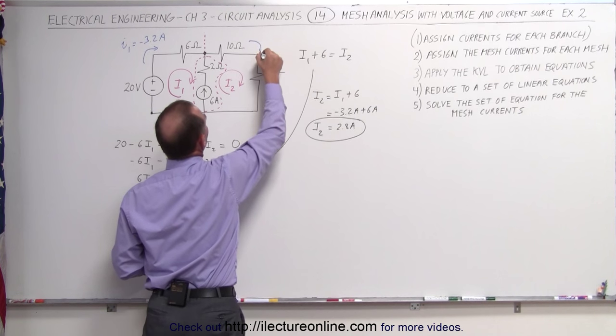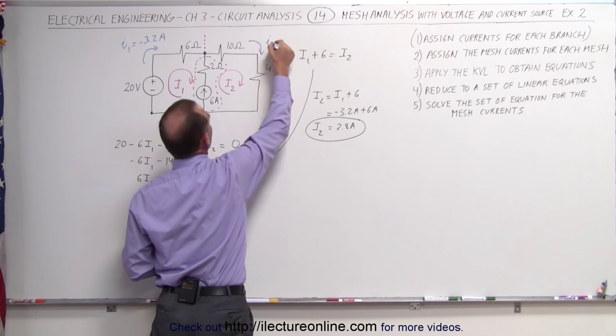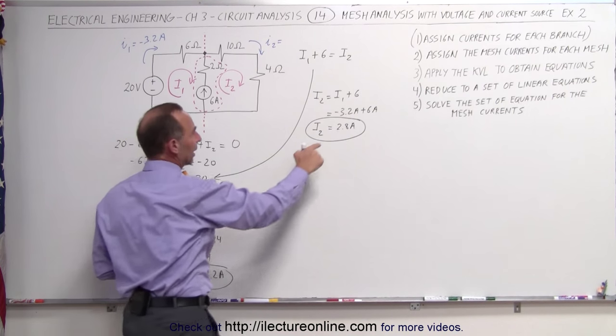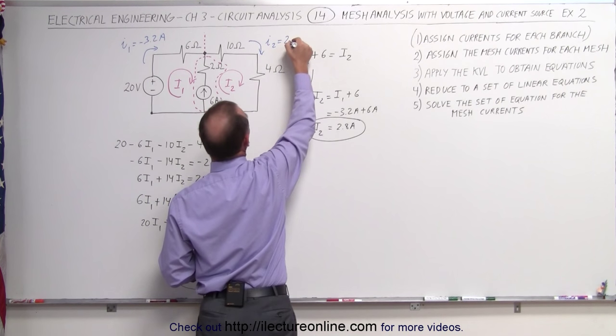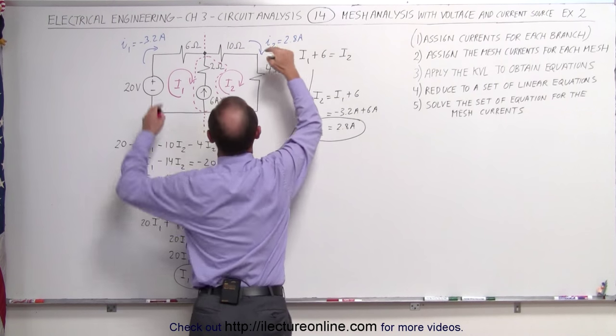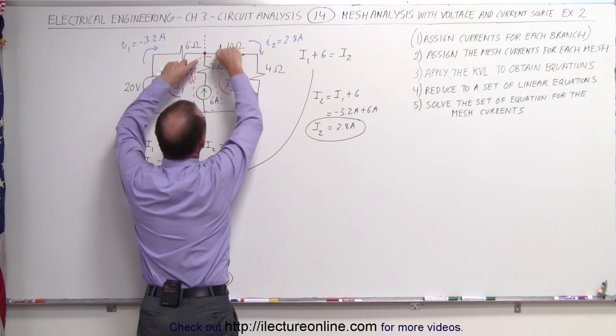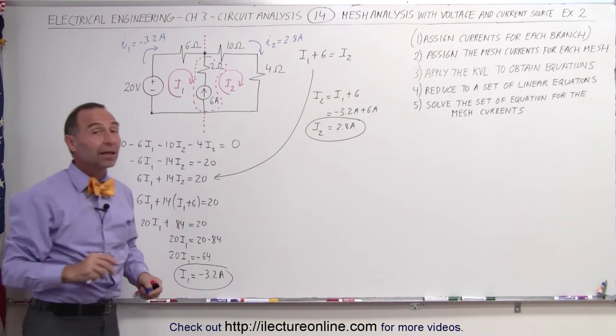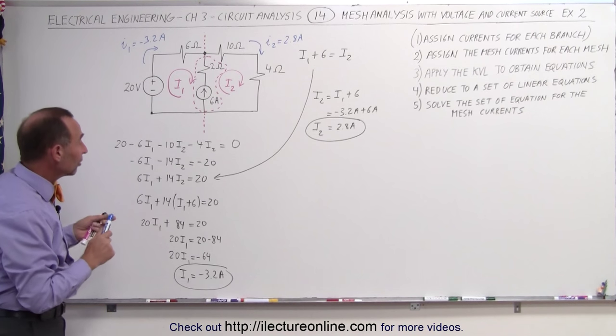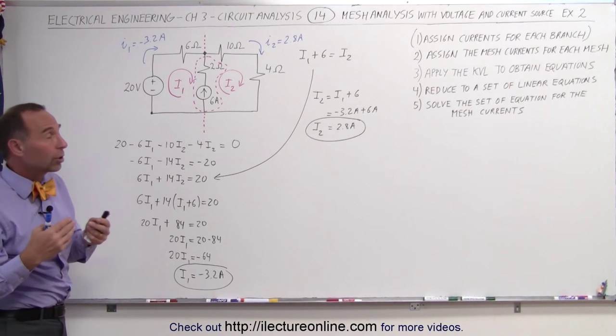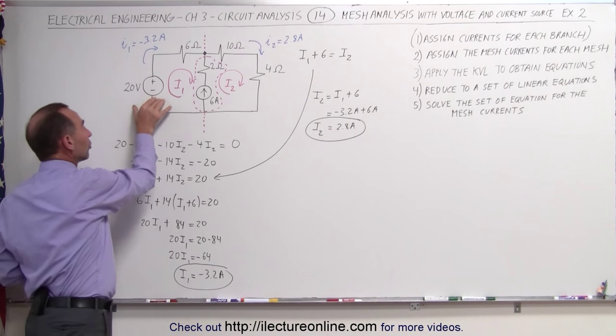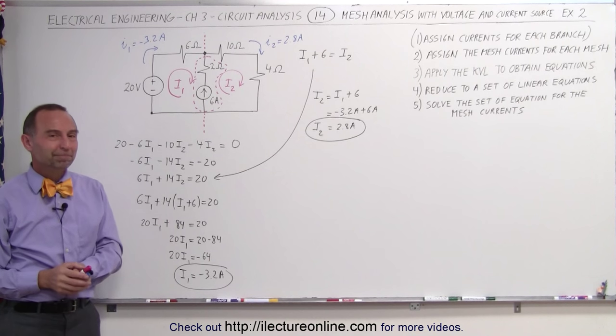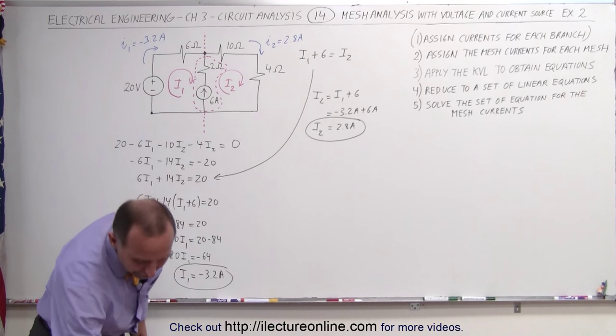Here, if we think this to be I2, notice I2 is the same direction as the mesh current I2, which means that this equals 2.8 amps in this direction. So we have current flowing in this direction, current flowing in this direction coming together, and then current flowing up the center branch like that. That's how we use the mesh analysis method to work on circuits that have both voltage sources and current sources, and that's how it's done. Thank you.